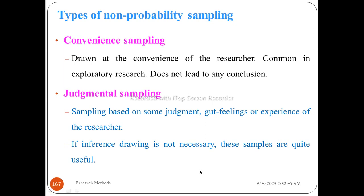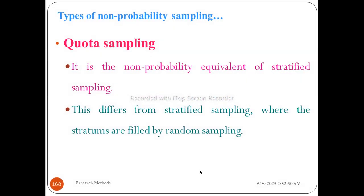It is a non-probability equivalent of stratified sampling. This differs from stratified sampling where the strata are filled by random sampling. If inference is not necessary, these samples are appropriate to use.